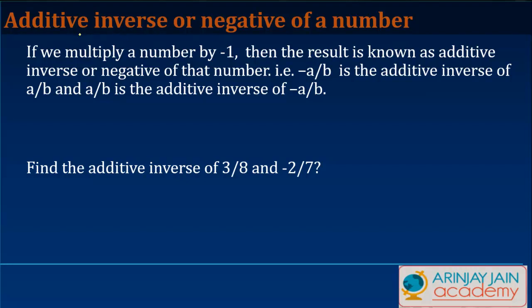Additive inverse or negative of a number. Many times you have any number, let's say for example 3/6, 4/7, minus 3/7, minus 6/8. If you multiply any given number by minus 1, the result that you get is known as the additive inverse or negative of that number.